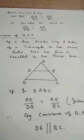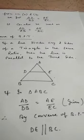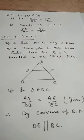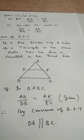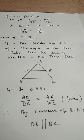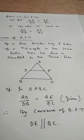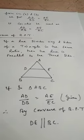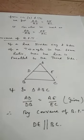Now we come to the converse. If a line divides any two sides of a triangle in the same ratio, then the line is parallel to the third side. For example, if in triangle ABC, AD by DB is equal to AE by EC, then by the converse of BPT, DE is parallel to BC. To summarize: if a line is parallel in a triangle, we use BPT; if the ratios are equal, we use the converse of BPT.